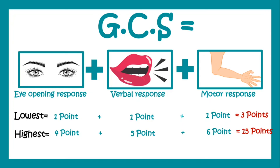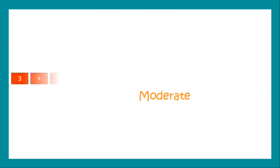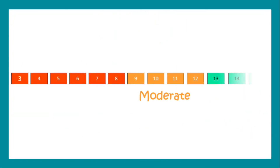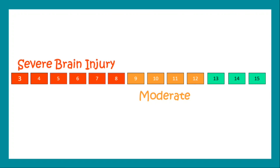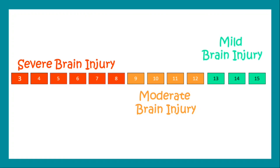Based on this scale, GCS ranges from three to 15. A score of three to eight represents severe brain injury, nine to 12 indicates moderate brain injury, and 13 to 15 represents mild brain injury.